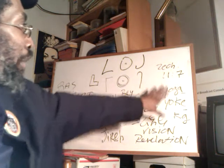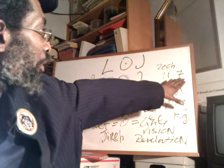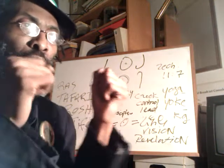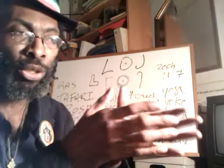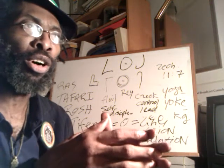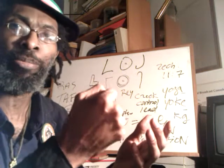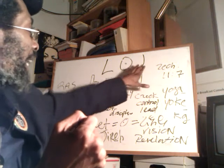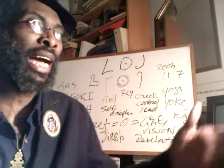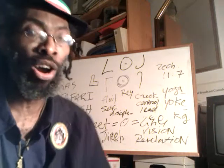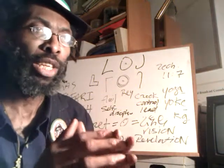This verse — Zechariah chapter 11, verse 7 — is important because it's one of the prophetic words that speaks of the rod, the staves. King James interprets it as staves; in Amarinya we call it the Betur, the scepter. These symbolize two scepters: the L in L.O.J., or Lion of Judah, and the J symbolize two scepters or two staves. In ancient Egyptian archaeology, pictures, and artifacts, you will see these two symbols.